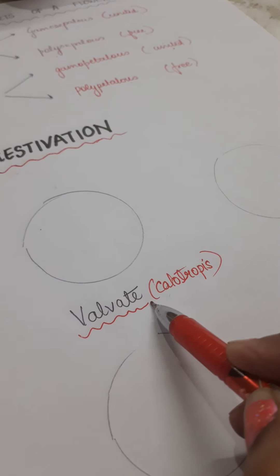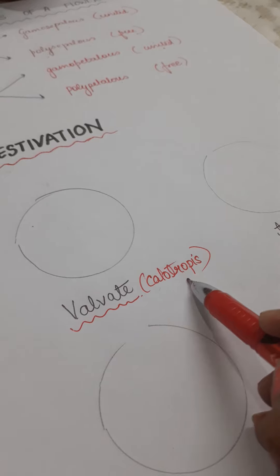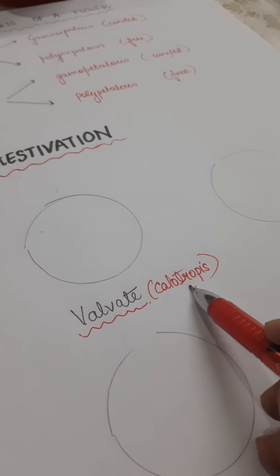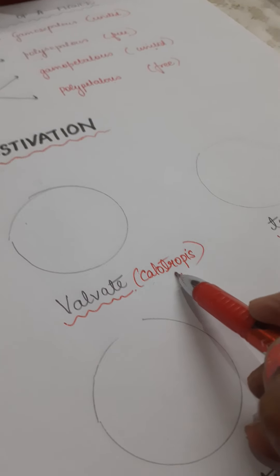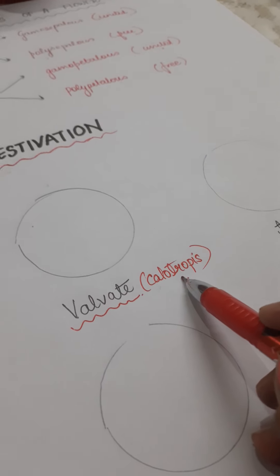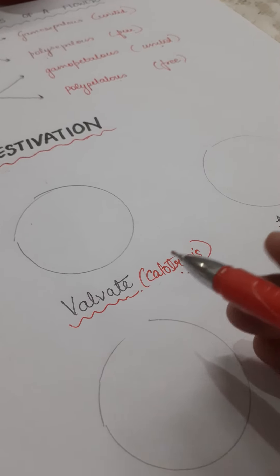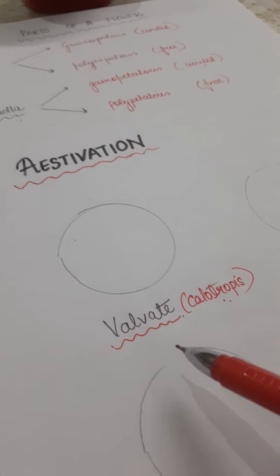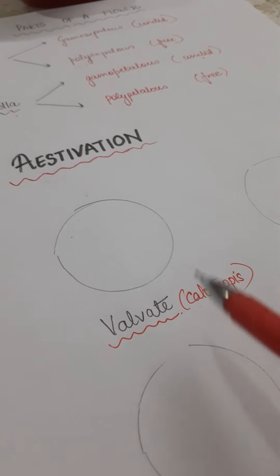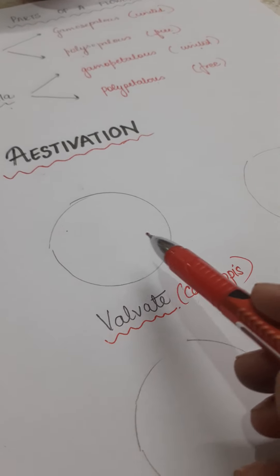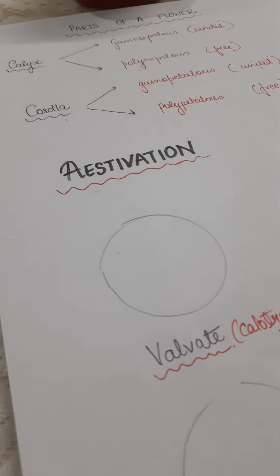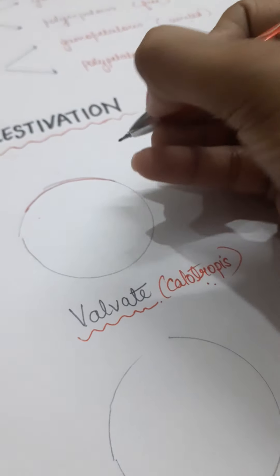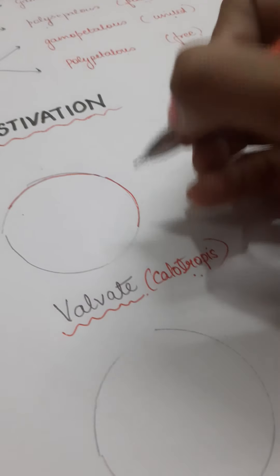Now, first one is valvate. I have written the example so that you might see it again and learn it. So valvate, the example is Calotropis. Supposingly we have five petals, so our flower must be a pentamerous flower. They can be gamopetalous or polysepalous condition. But valvate aestivation tells us that all the petals are present, all of them are near to each other but none of them are overlapping.